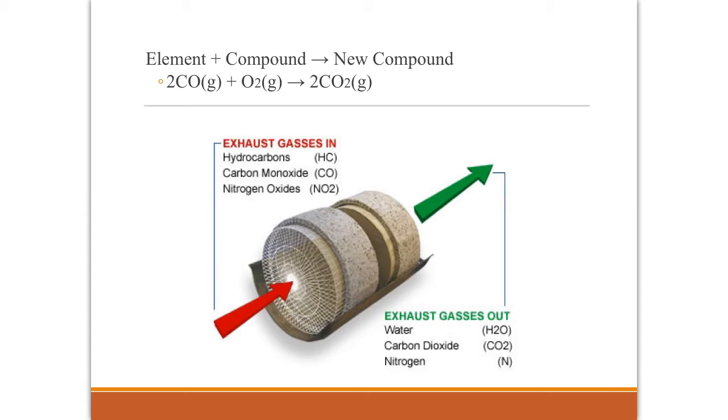Here's an example of an element and a compound combining to make a new compound, where we have carbon monoxide, a very toxic gas that's produced by our combustion engines in our cars, combining with oxygen to make carbon dioxide, which, although not a wonderful substance to have around, is much better than carbon monoxide. This picture is showing a catalytic converter that we have in our cars that will turn carbon monoxide into carbon dioxide through a synthesis reaction.